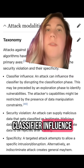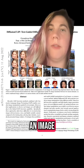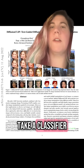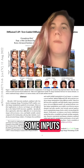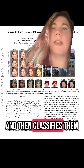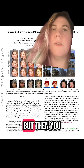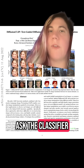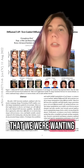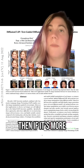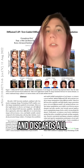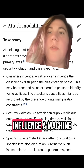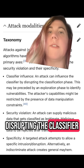One is called classifier influence. In a diffusion model, you take an image — usually complete noise, but you can also take an input image — and then you take a classifier, which is a machine learning model that looks at some inputs like a picture and classifies them, tells you what's in the image. You change a few pixels and ask the classifier: has this turned into the image we were wanting? If it's more, it keeps tweaking pixels in that direction and discards all other possible tweaks. You can influence a machine learning model by disrupting the classifier.